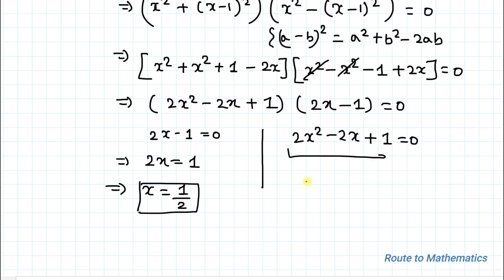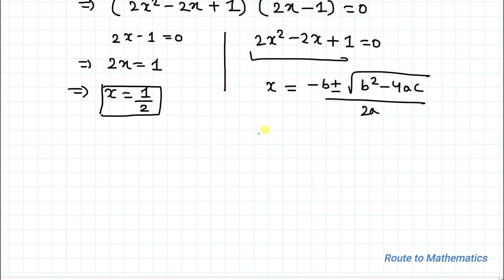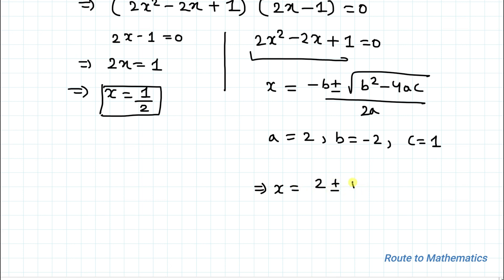We also have the quadratic equation 2x squared minus 2x plus 1 equals 0. We apply the quadratic formula: x equals minus b plus or minus root of (b squared minus 4ac) divided by 2a. Here a equals 2, b equals minus 2, and c equals 1.